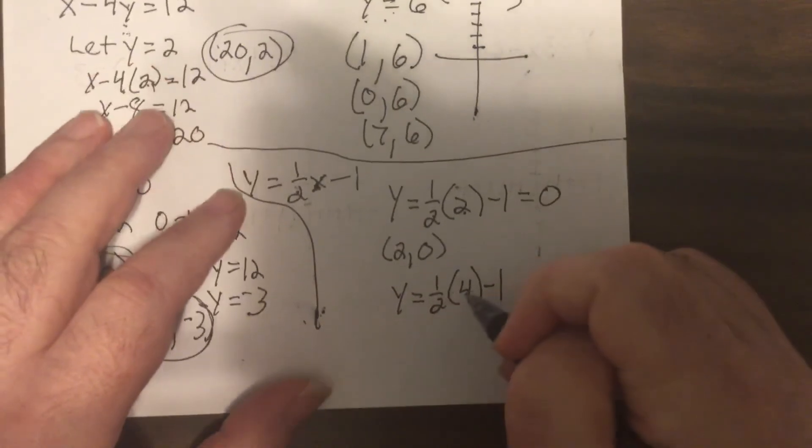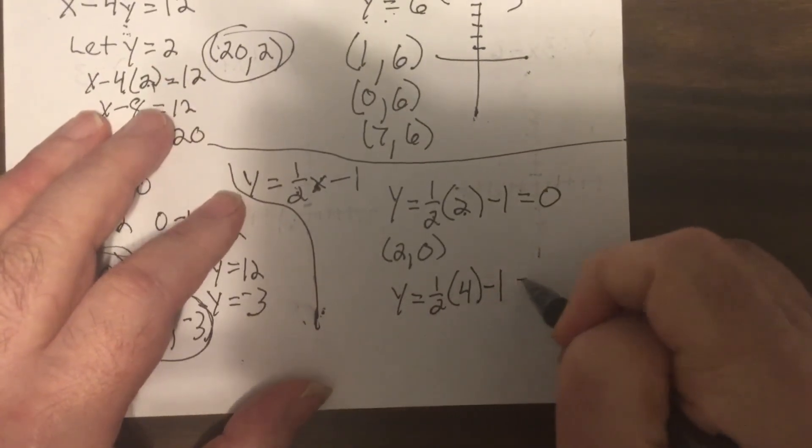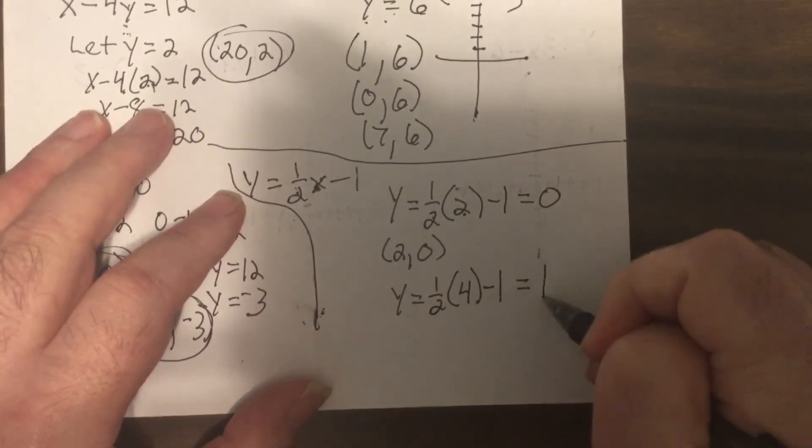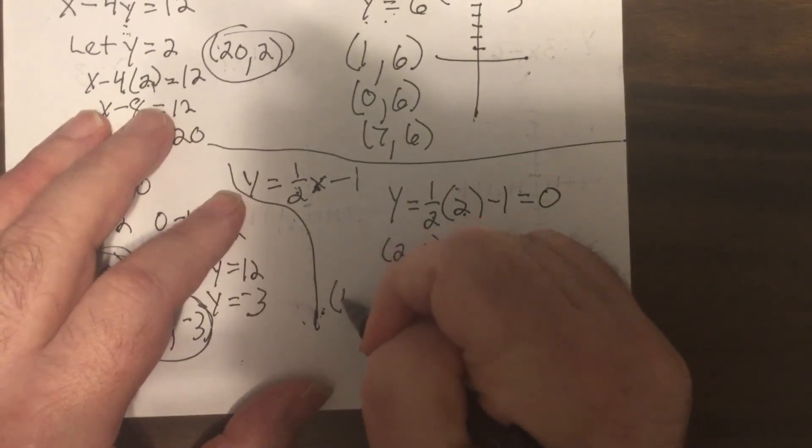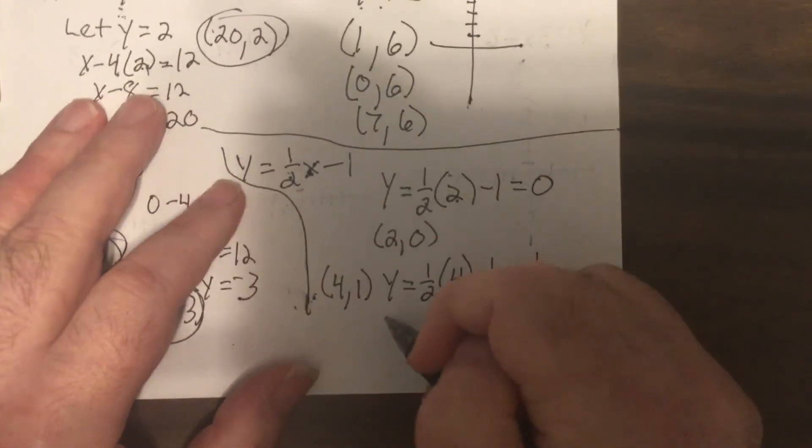Let's put in four. So one half of four is two, minus one is one. So it would be four, one.